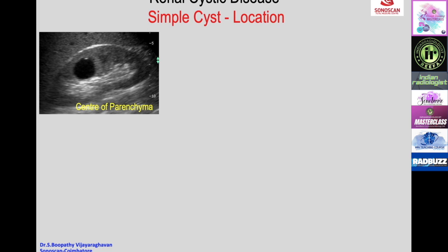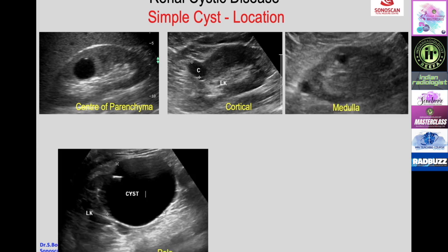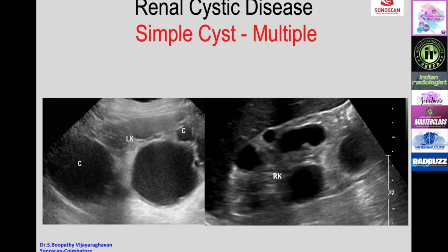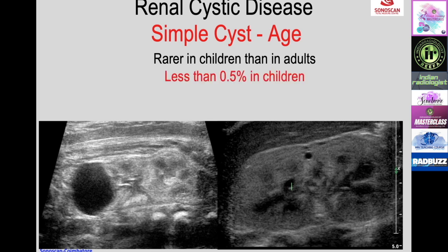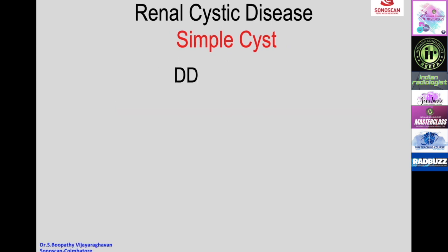Simple cyst location can be in the center of the parenchyma, cortical, medullary, in one of the poles (most common), or very rarely exophytic (bulging out of the kidney surface). Simple cysts can be multiple while maintaining their characteristics. Occurrence varies with age: less than 0.5% in children, more than 10% in adults aged 50 years and older, and more than 30% in adults over 70 years—showing that incidence increases markedly after 50 years.